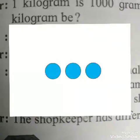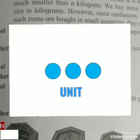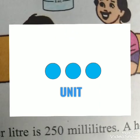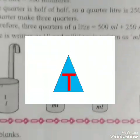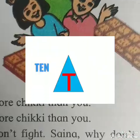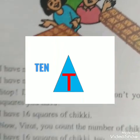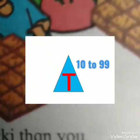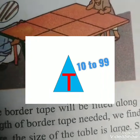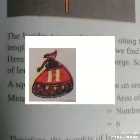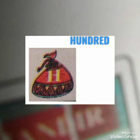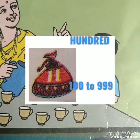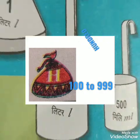See these symbols. These are unit symbols and unit numbers start from 0 to 9. See the next symbols — these represent 10, and the tens numbers start from 10 to 99. This is the symbol of 100, and the hundreds numbers start from 100 to 999.